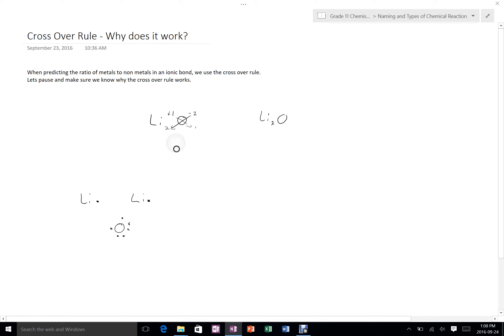We can see why that is because here's our lithiums with Lewis structures and they have one electron each. When they give up one electron, they have a charge of plus 1. Alternatively, when oxygen accepts two electrons, it ends up with a charge of 2 minus, as in it's taken in two extra electrons.